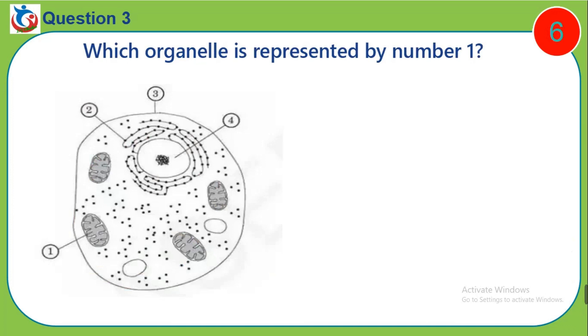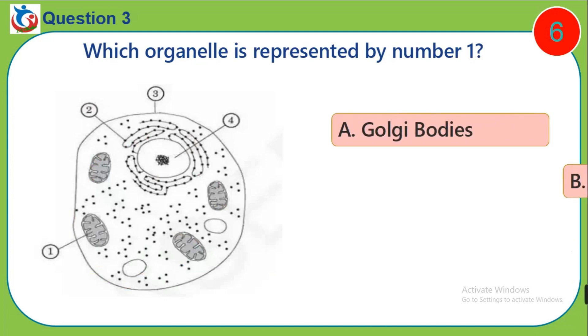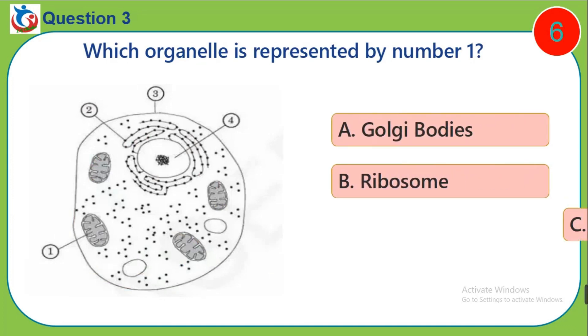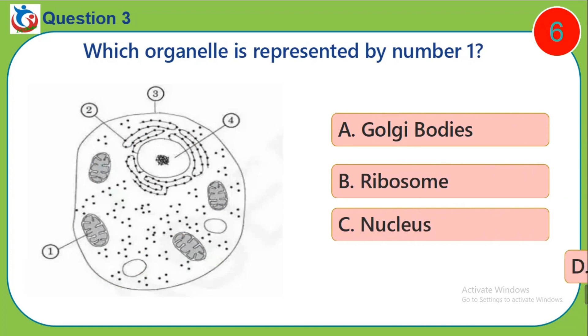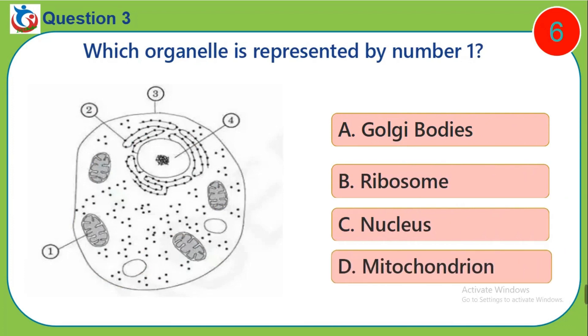Question 3. Which organelle is represented by number 1? A. Golgi bodies. B. Ribosome. C. Nucleus. D. Mitochondria.